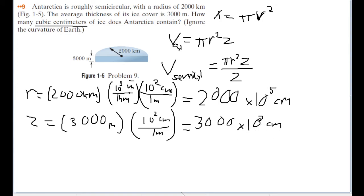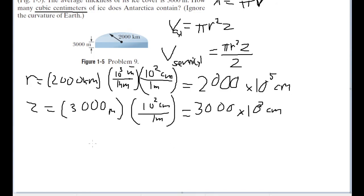So, now we have all the values that we really need here. So, now let's plug it in for final volume. So, our volume is then equal to the formula we have up here. So, that will be pi times the radius squared. So, the radius is 2,000 times 10 to the 5th centimeters. The whole thing is squared.